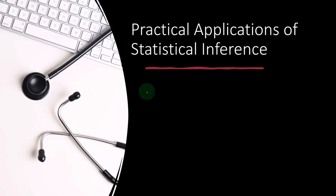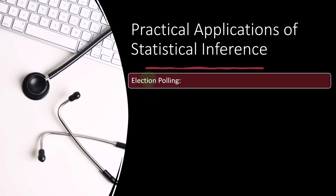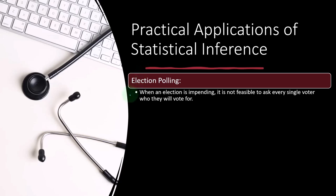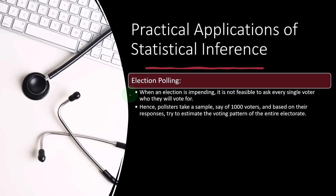Practical applications of statistical inference. Election polling is usually the first thing that comes to people's minds. When an election is impending, it is not feasible to ask every single voter who they will vote for. When you're trying to predict the results of the election, we can't just ask everyone, because that would basically be taking the election at that point in time. So what we can possibly do is have pollsters take a sample — say, 1,000 voters — and based on their responses, try to estimate the voting pattern of the entire electorate.